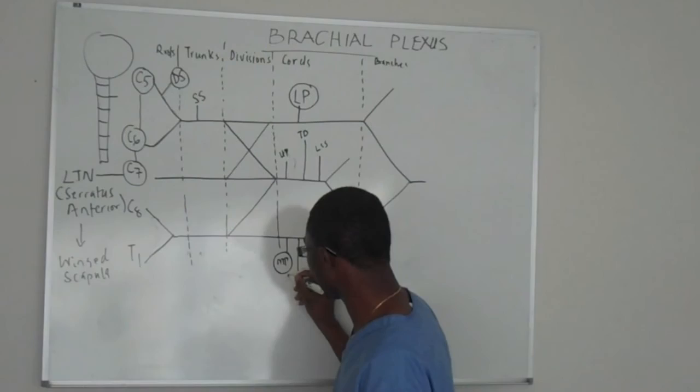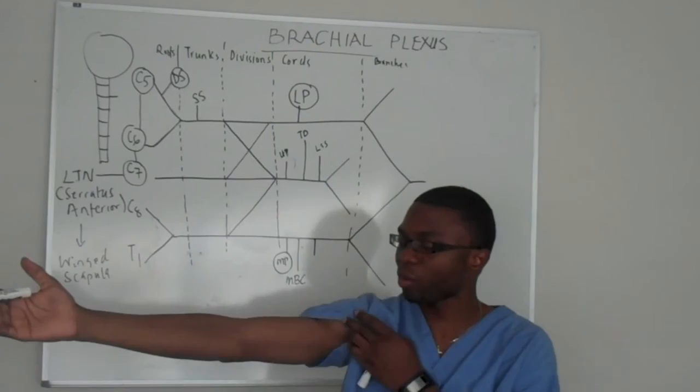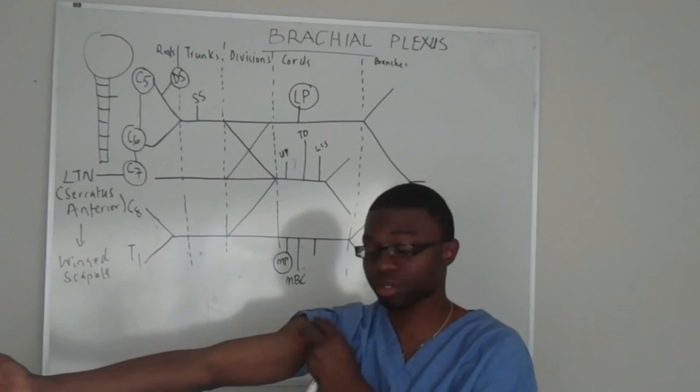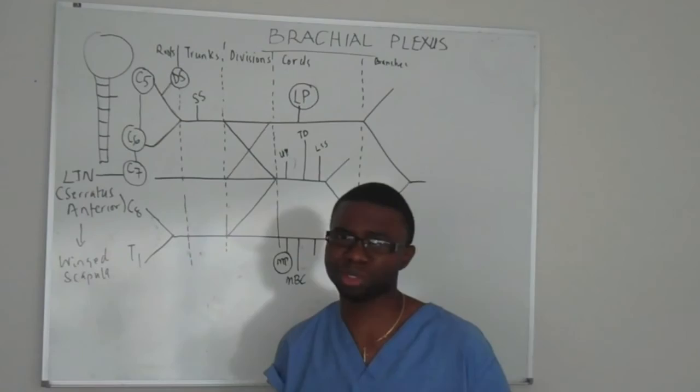The medial brachial cutaneous nerve, called MBC, is a cutaneous nerve — it goes to your skin. When they say medial brachial cutaneous, it's literally going to the brachial part. This is brachial — what we call brachial. Brachial, anti-brachial: arm, forearm.